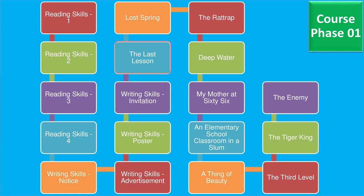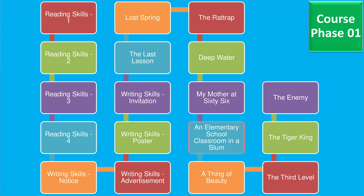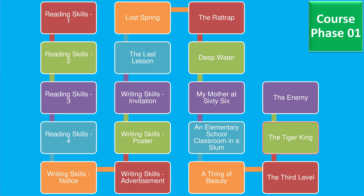From the textbook Flamingo we have the topics: The Last Lesson, Lost Spring, The Rattrap, and Deep Water. In Poetry we have My Mother at Sixty-Six, An Elementary School Classroom in a Slum, and A Thing of Beauty. From the book Vistas we have the topics: The Third Level, The Tiger King, and The Enemy.